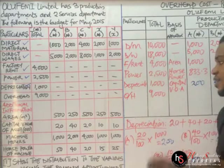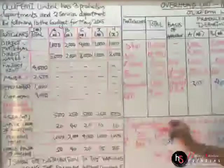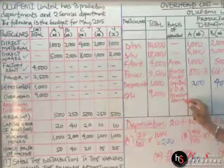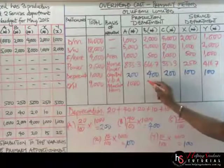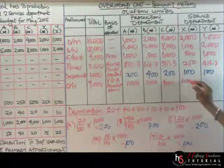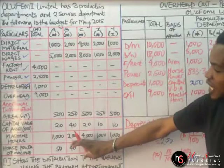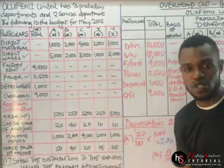We write 'machine hours' as the basis for overhead. The machine hour values are: A = 1,000; B = 2,000; C = 4,000; X = 1,000; Y = 1,000. Everything has now been apportioned — direct material, direct wages, factory rent, power, depreciation, and overhead.